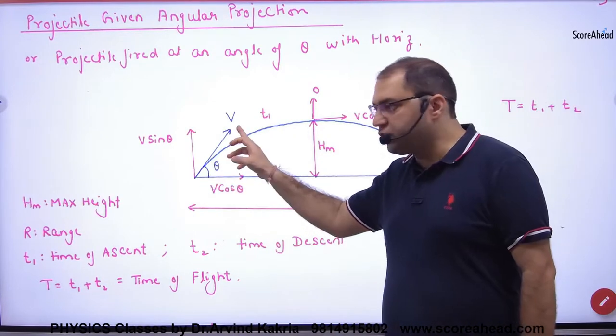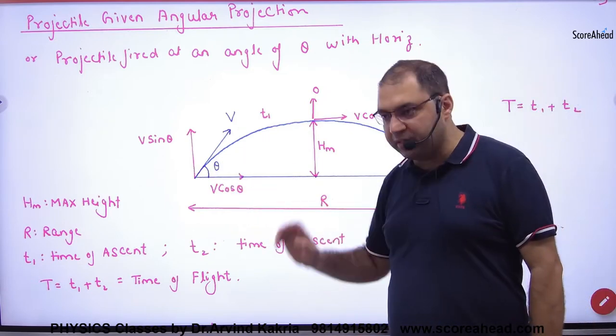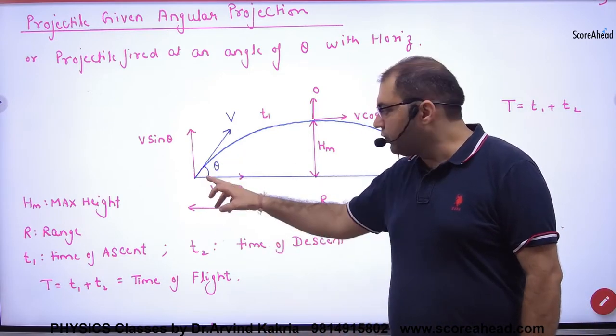The body is thrown with velocity v. There are two initial components: vcosθ and vsinθ in x and y. So the body came from here.